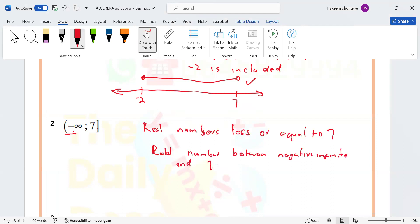And seven, seven is included. Okay, how can we represent this on the number line? How is it going to look like? Look at this here.